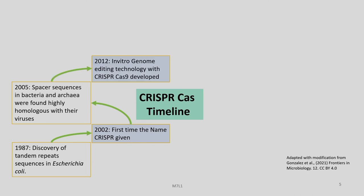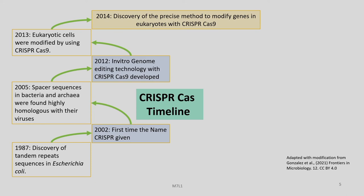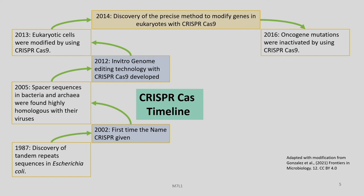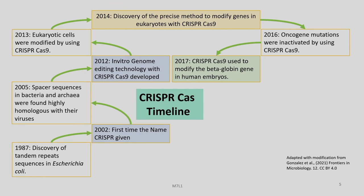By 2012, this basic knowledge was converted into a technology. It was possible to do in vitro genome editing with CRISPR-Cas9. The very next year, this technology was used for modifying eukaryotic cells, and in 2014 there was discovery of a precise method to modify genes in eukaryotes with CRISPR-Cas9. In 2016, oncogene mutations were inactivated using CRISPR-Cas9 technology, and in 2017, CRISPR-Cas9 was used to modify the beta-globin gene in human embryos.